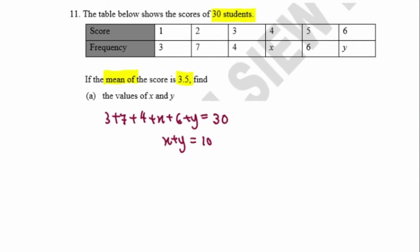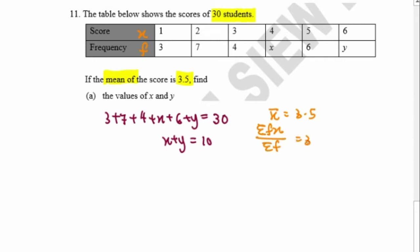Using the second piece of information — the mean is 3.5 — our data x refers to the score and f refers to the frequency. The formula is: sum of fx over sum of f equals 3.5. For sum of fx, we multiply: 1 times 3 equals 3, and 2 times 7 equals 14.